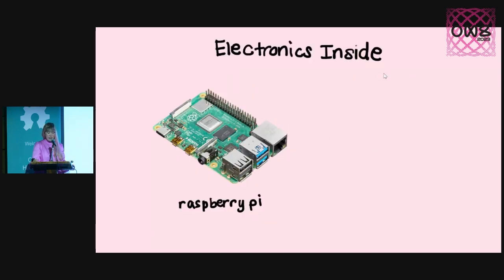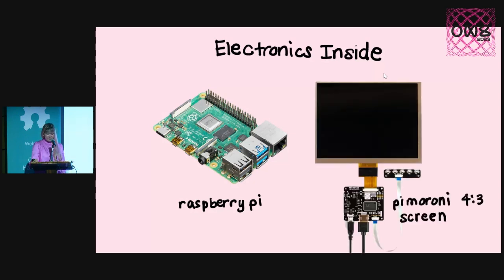So when I thought about the electronics inside, I had a bunch of raspberry pies laying around, and thankfully they all already fit the fruit theme. I shopped for different possible displays online, and I was really in love with the 4-3 aspect ratio with a Pimoroni screen. So that's what I picked. And I had all the cables to connect them, just in a random electronics bin in my closet.